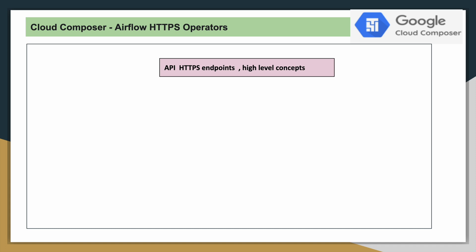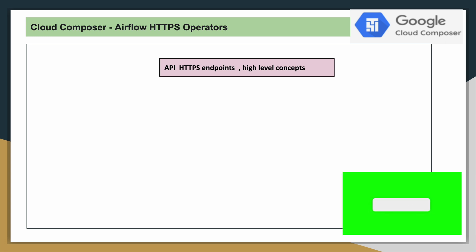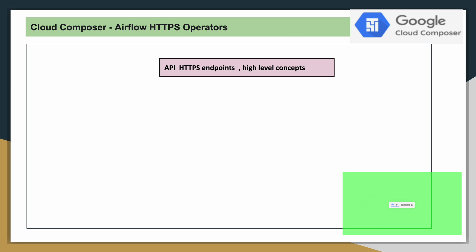Here I will give high-level information required for this demo related to Web APIs, that is HTTP endpoints. There is a standard mechanism to interact with Web APIs by using different HTTP methods like GET, PUT, POST, and other methods. We will use all these methods based on our requirement to communicate with the Web APIs or HTTP endpoints.